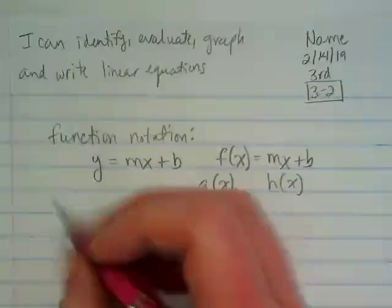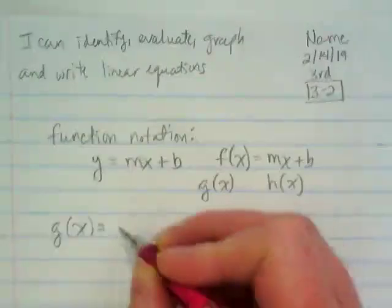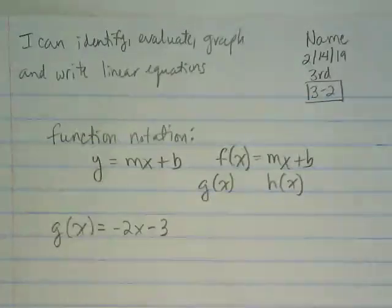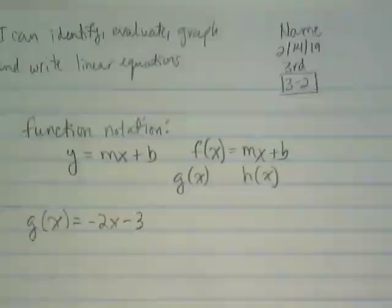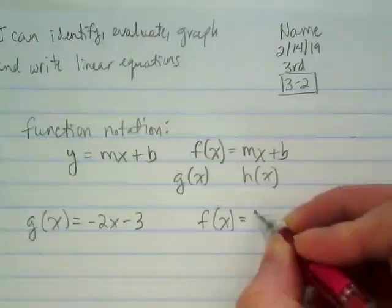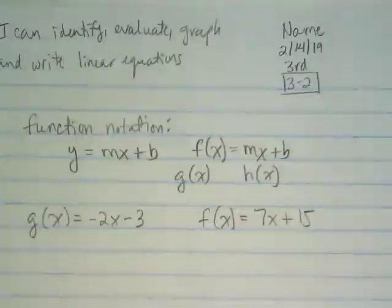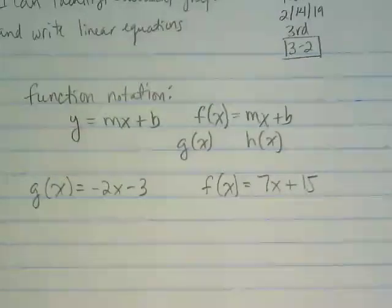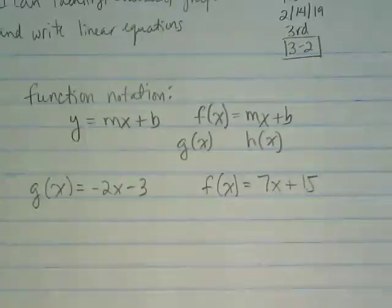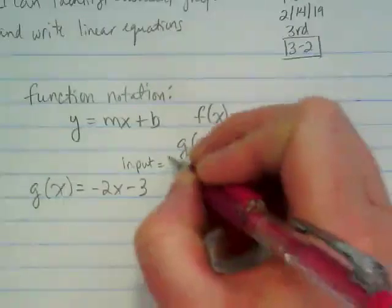So we're going to do a couple of examples. We're going to start with g(x) equals negative 2x minus 3. And we're going to do a problem f(x) equals 7x plus 15.